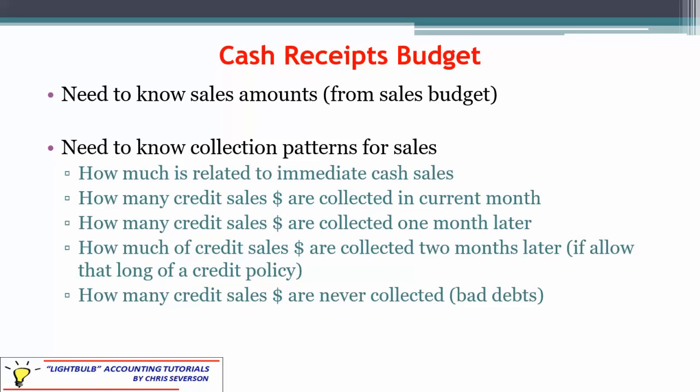In some cases, if you allow 60 days or more for your accounts receivable, you may have some percentage of credit sales collected two months later, but most textbook problems don't go that far. The final consideration is that since we're dealing with credit, we know there's a chance we may not receive all of it. There may be a 5% bad debt expense — any predicted amount we're never going to receive must be considered, because it's never going to appear in the cash receipts. It came from sales, but it will never make it to cash receipts.